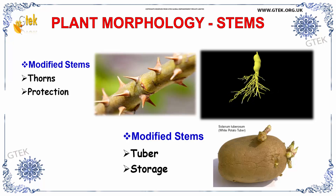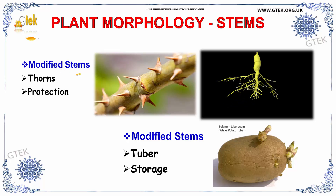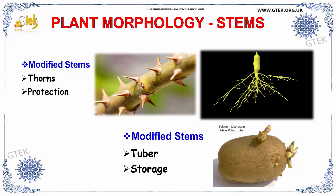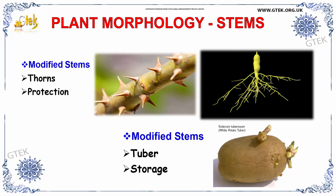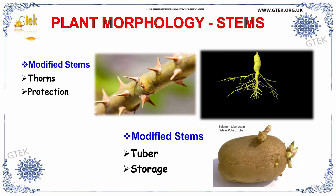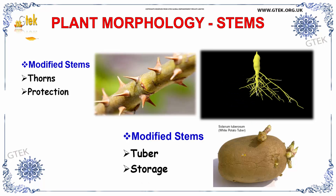Now let us see about stems. Stems are classified into modified stems. Modified stems have thorns for protection. You can see thorns on a stem — they are used to protect it. And it has a tuber, which you can see here, used for storage purpose.